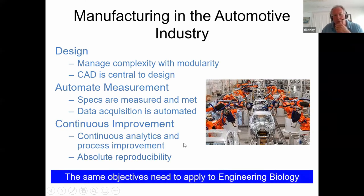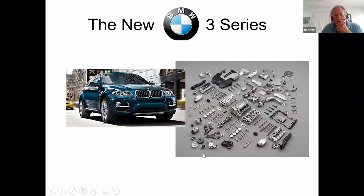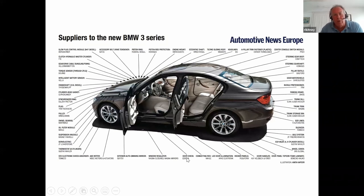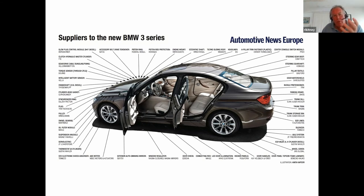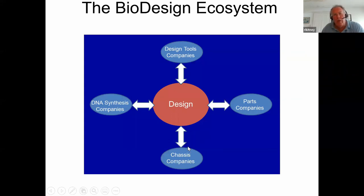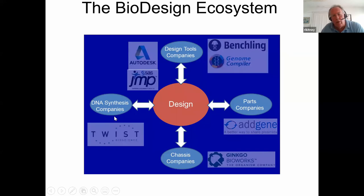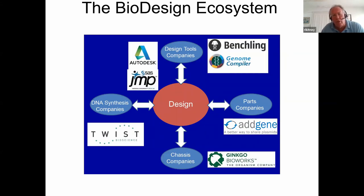The same objectives are applied now to engineering biology. Here is an example of a 3 Series BMW, where standard components are supplied by 50 standard component manufacturers — BMW now representing an assembly company. This is what we're working towards in terms of an ecosystem for synthetic biology: tools companies, parts companies, chassis companies, DNA sequencing and synthesis companies — all beginning to exist in quite large numbers — surrounded by the development of information systems companies for this whole bio-design ecosystem.